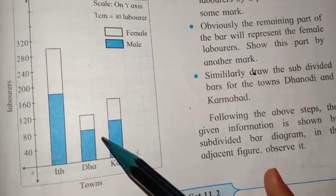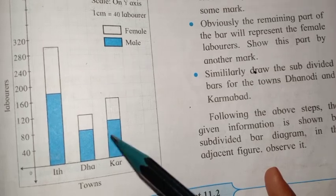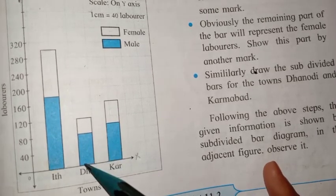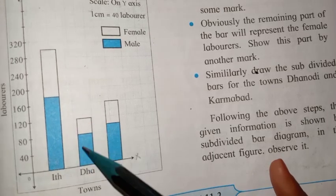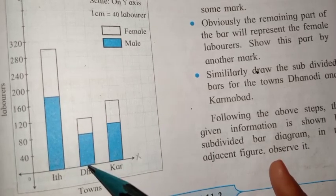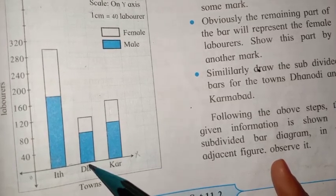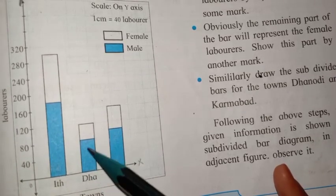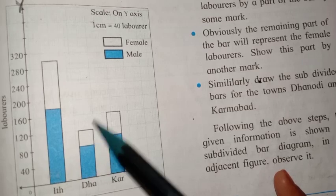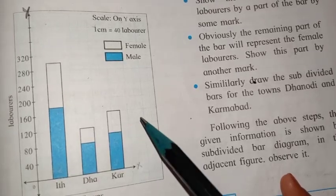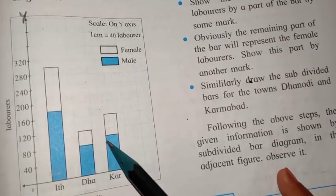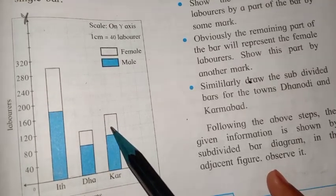Similarly, for the next town Nodi, the total number of labourers is 120. Draw a single bar of 120 and then divide it. Subdivided means you draw only one bar and then divide it. Number of male labourers is 80, so mark 80 and give blue color for that part. The remaining 40 is female labourers. For the last town, total labourers are 160: 100 male labourers and remaining 60 female labourers.